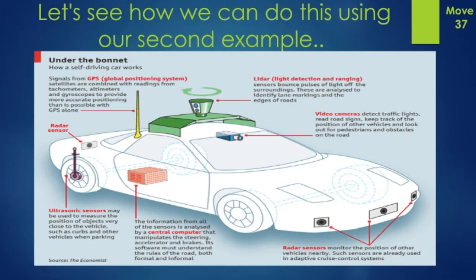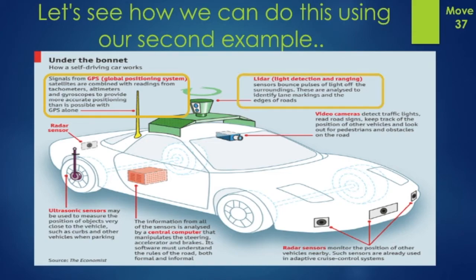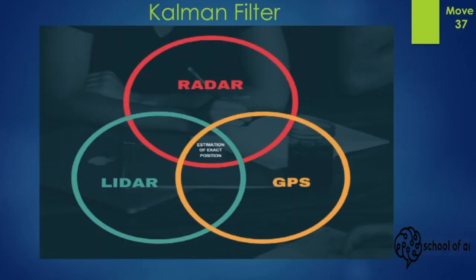All of these sensors are controlled by a central computer. To know the location of the car, we can use GPS — but will that always work? What if we are inside a tunnel or between two large towers? Then we will get significant GPS errors and lose track of the car's position. To avoid this problem, we have LIDAR (light detection and ranging), which gives the current position, and radar, which monitors nearby vehicles. We can use a Kalman filter to combine these three sensors and get the exact location of the vehicle.